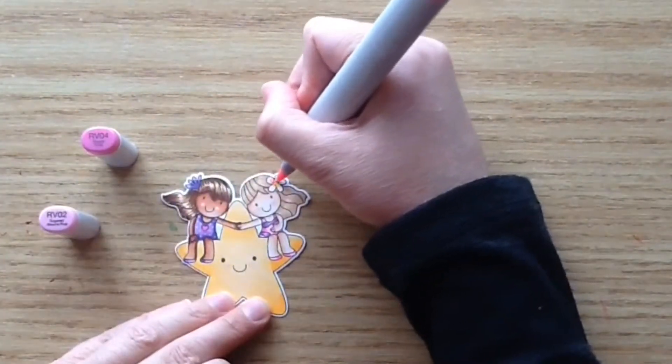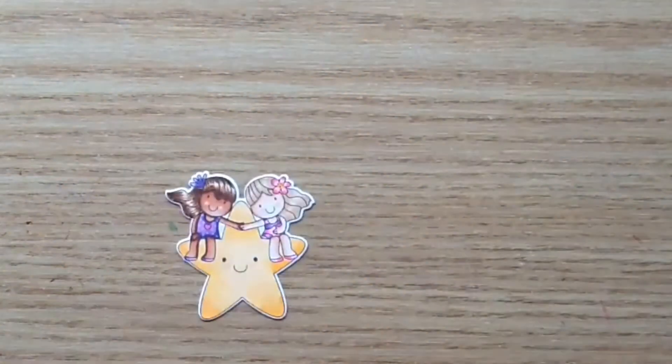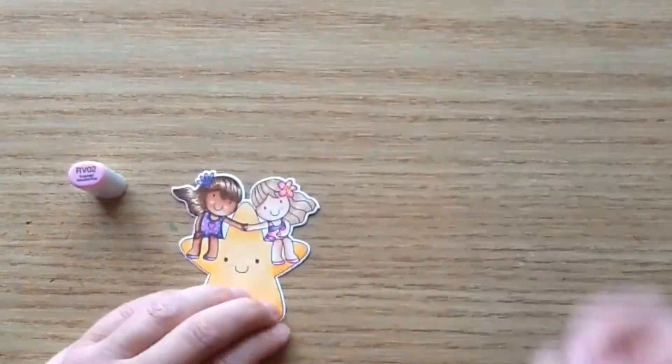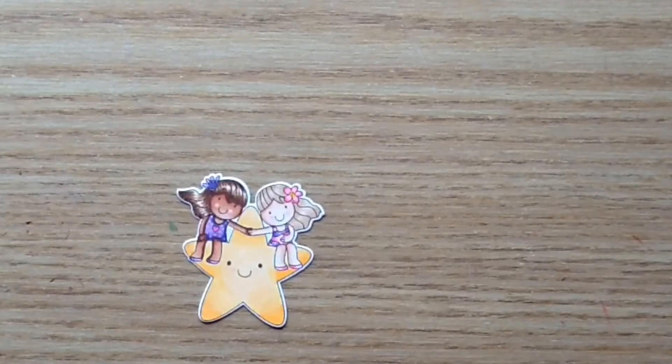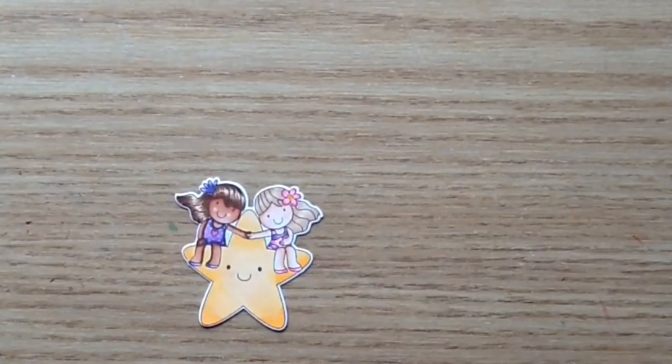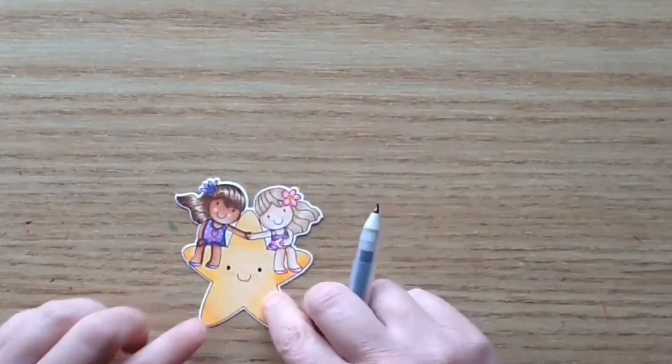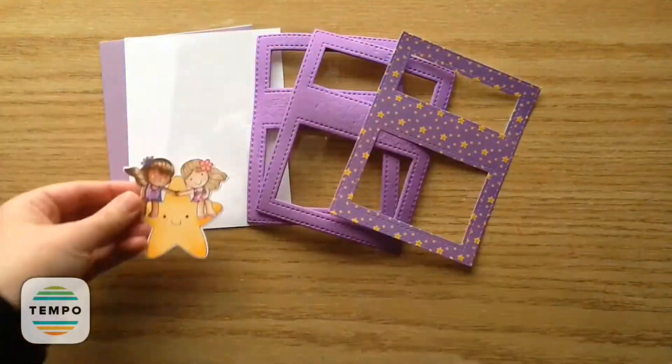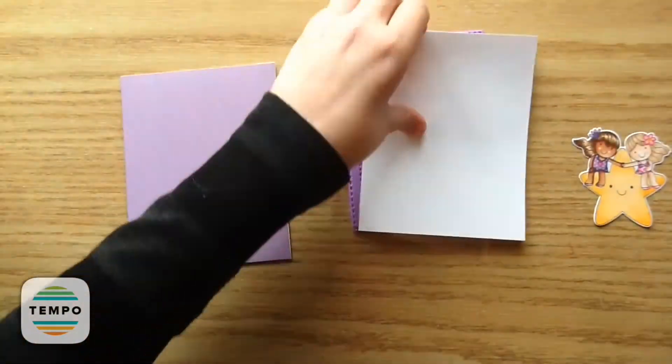For the flower, I use Y35. And then I use RV02. And then I add a little bit of RV04 just to give it a nice little blend out. And that's my coloring. So I'm just taking my white jelly pen for the little cheeks there. And then I take my black jelly pen to add some glaze on the eyes. So I've got my cute little image here. And I'm just going to set that aside while I do the shaker card bit.